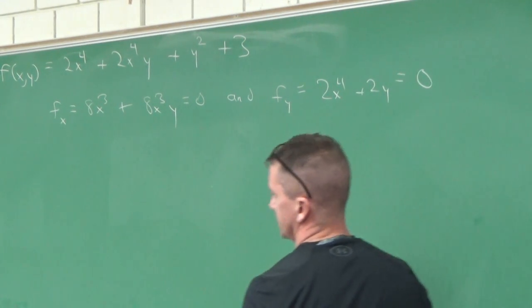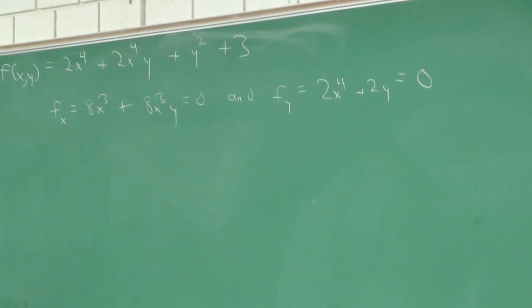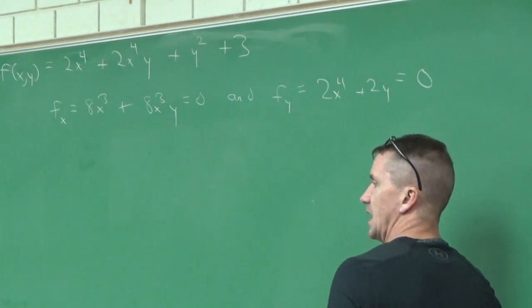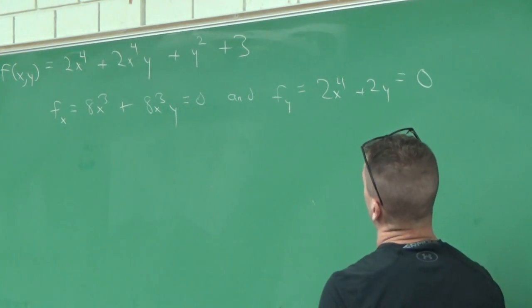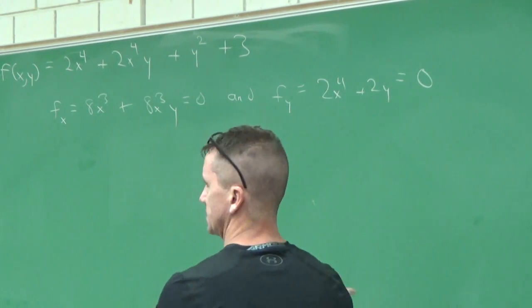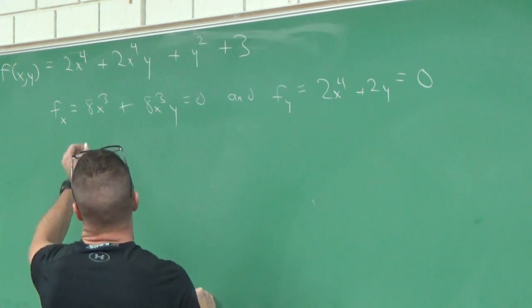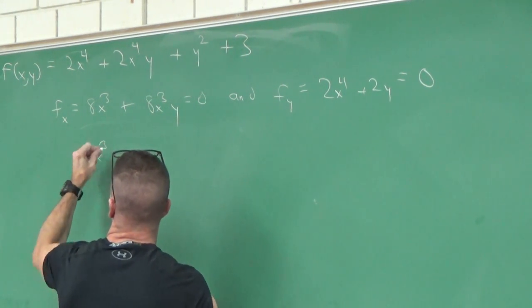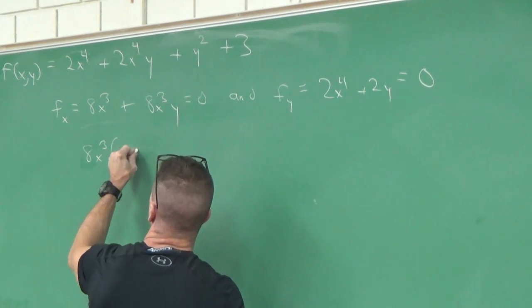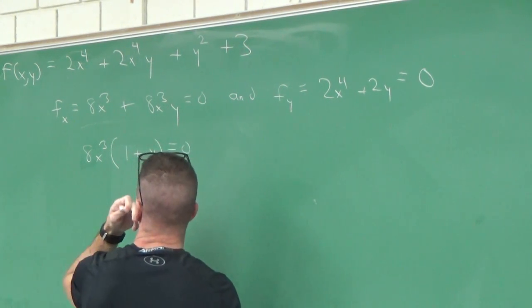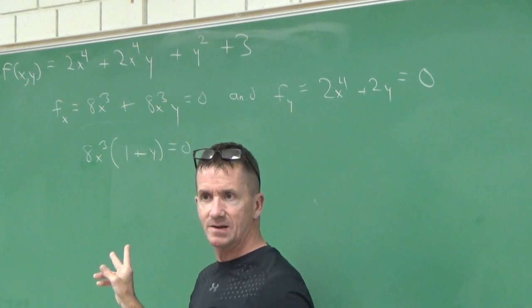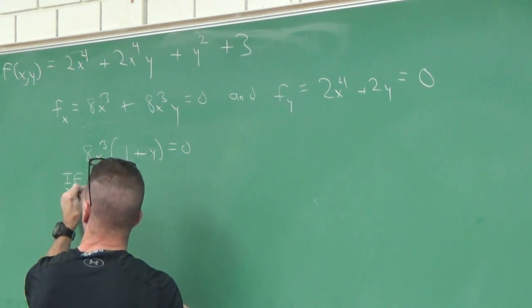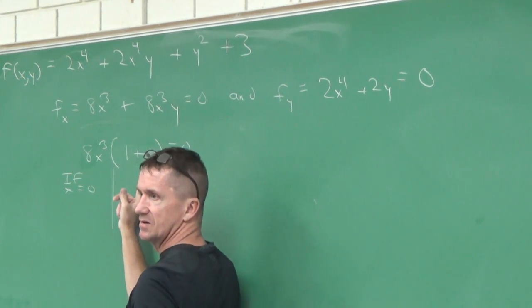Now we've got to solve this system. The only challenge with this section is solving the system of equations. Factor if you can, solve for a variable, then substitute into the other. I'm going to start on the left. Factor out an 8 and an x^3. I'm left with 8x^3(1 + y) = 0. So I notice two things are happening. If 8x^3 equals zero, then x equals zero. What's the other scenario? If y equals negative one.